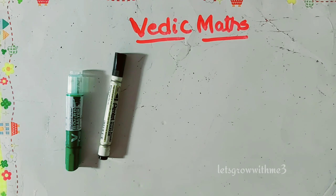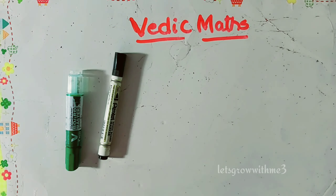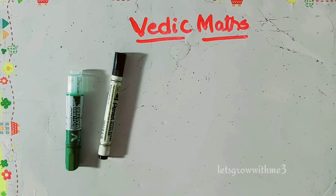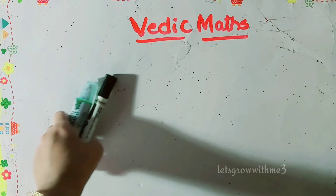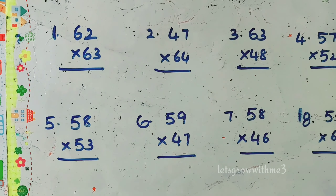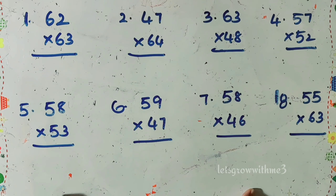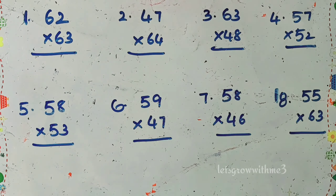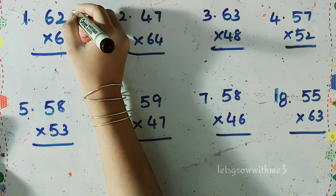Hello viewers, welcome back to my channel. Today we are discussing multiplication using the Vedic matrix — how we can do easy multiplication using our tricks. We have already done a few multiplication tricks in earlier videos. Here I am considering a new type of example: in the earlier video we took numbers near 200, so now I am considering numbers near 250, and how we can apply our Vedic matrix for this type of multiplication.